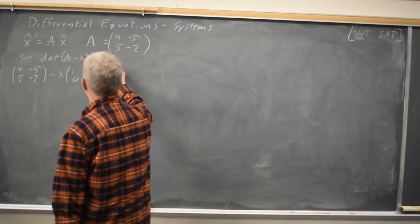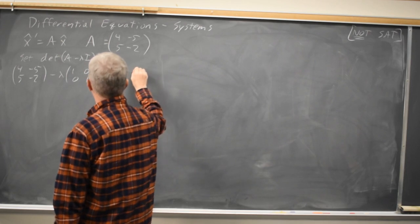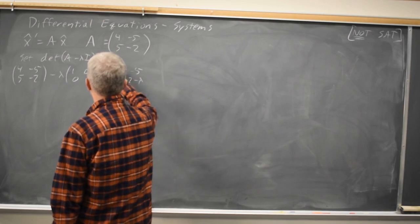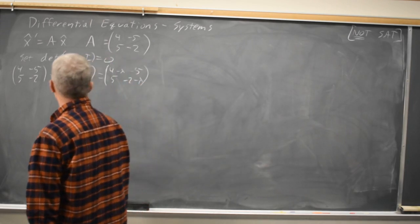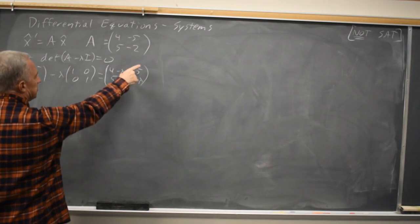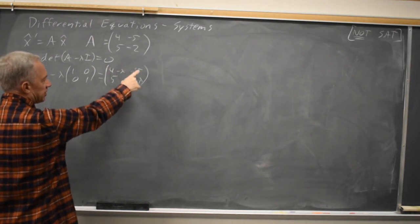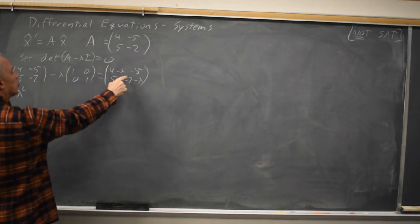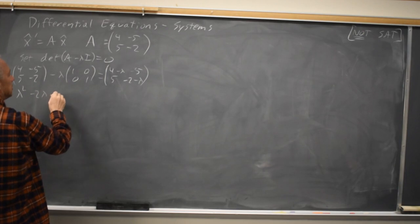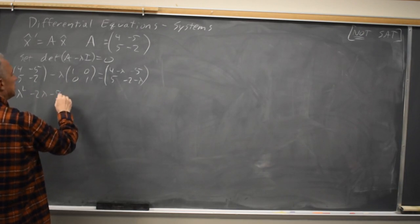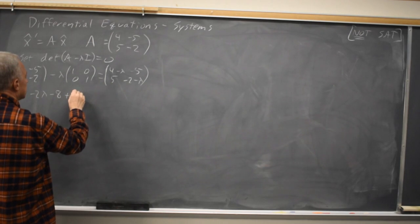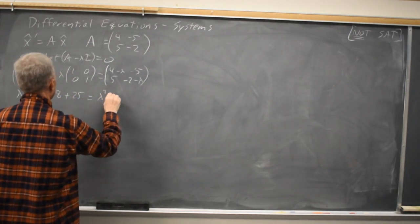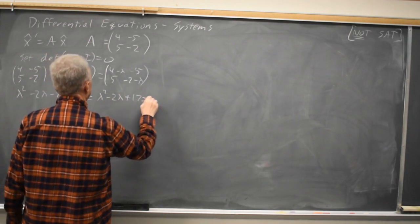Equals 4 minus lambda, negative 5, 5, negative 2 minus lambda. And we want the determinant, which is the product AD minus BC, the product of the main diagonal minus the product of the off diagonal. So that would be lambda squared minus 4 lambda plus 2 lambda is minus 2 lambda, and then minus 8 and minus negative 25 is plus 25, is lambda squared minus 2 lambda plus 17 equals 0.